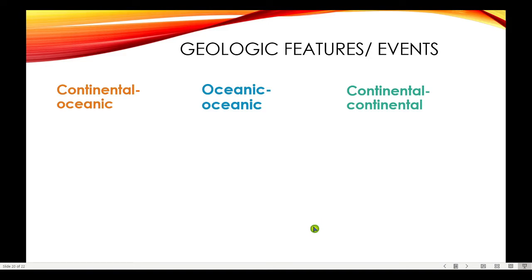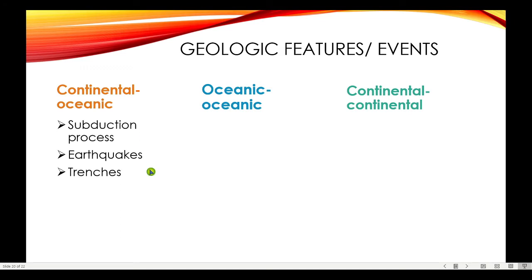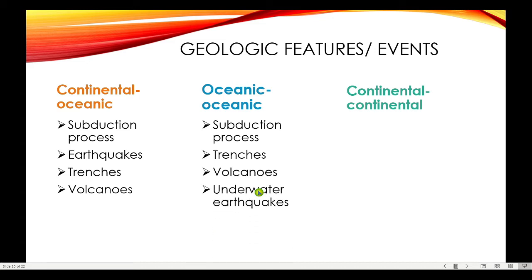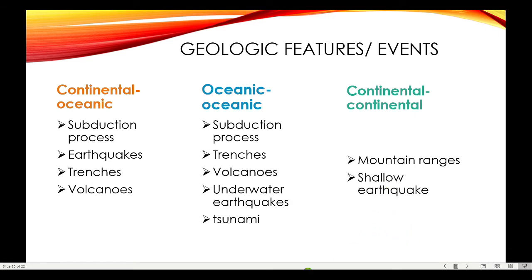Here's the summary of geologic features and events that may form along the different types of convergent plate boundaries. For continental-oceanic: subduction process, earthquakes, trenches, and volcanoes. For oceanic-oceanic: subduction process, trenches, volcanoes, underwater earthquakes, and tsunami. For continental-continental convergence: mountain ranges and shallow earthquakes.